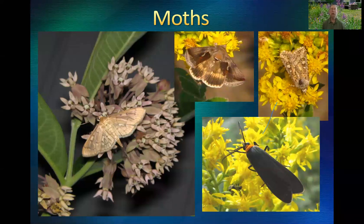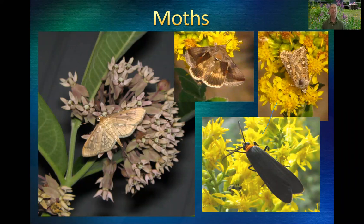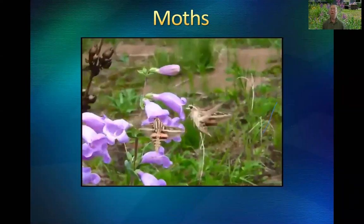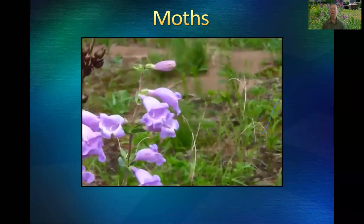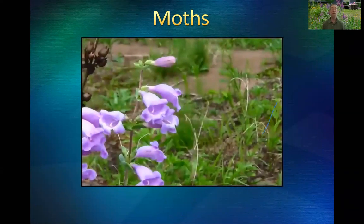Other moths are daytime flyers — celery looper, rubbed dart, and the yellow-collared scape moth. The moths that are really fascinating to me are the ones in the sphinx moth family because they fly like hummingbirds. These are white-lined sphinx moths on large-flowered penstemon — they're almost as big as hummingbirds, and if you see them out of the corner of your eye you might think you're seeing a hummingbird instead of a moth.